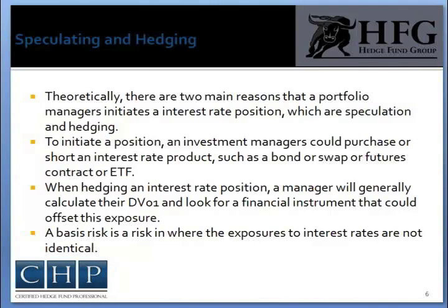To initiate a position, an investment manager could purchase a short interest rate product such as a bond or swap, or even futures or ETFs. These products generally move higher as interest rates move lower, and lower as interest rates move higher. When hedging an interest rate position, a manager will generally calculate their DV01 and look for a financial instrument that could offset this type of exposure.